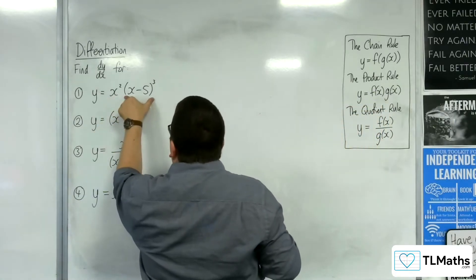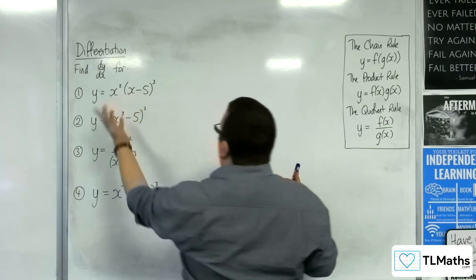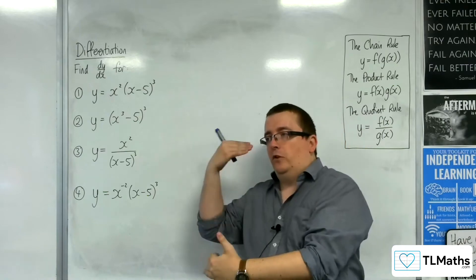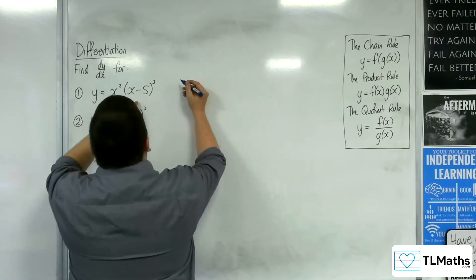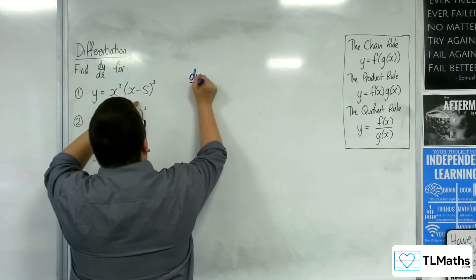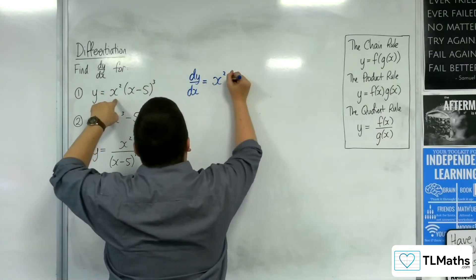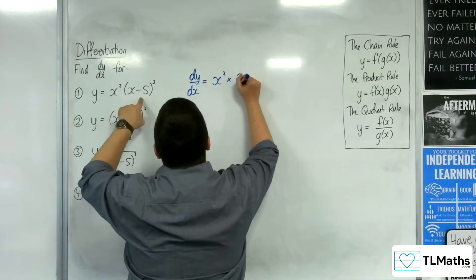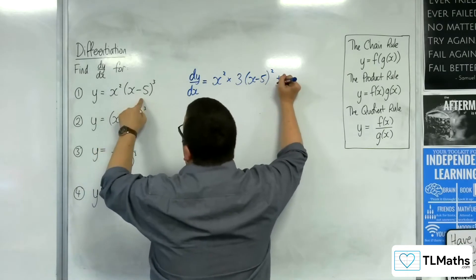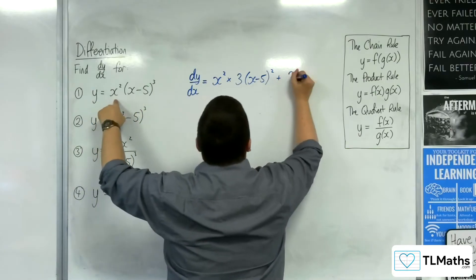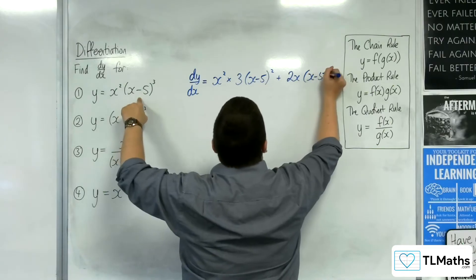You're also going to use the chain rule in order to differentiate the x minus 5 all cubed. So you're going to have situations where you've got the chain rule inside the product rule. For dy by dx, using the product rule, we've got the first times the derivative of the second — so using the chain rule, three lots of x minus 5 squared.